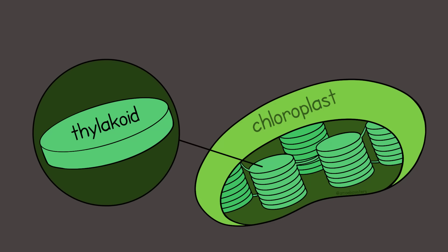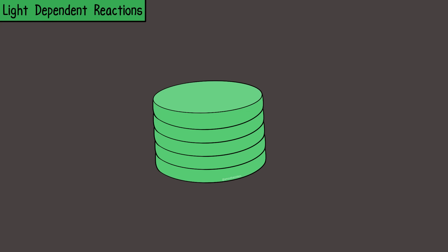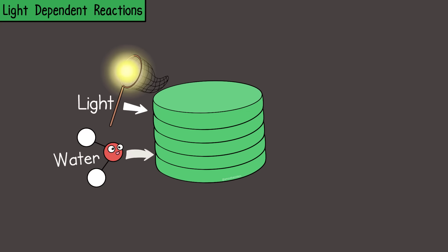Light-dependent reactions happen in the thylakoids—little compartments in the chloroplast that contain pigment. A collective stack would be a granum; multiple stacks would be grana. In the light-dependent reactions, light is captured and water—which is a reactant in the photosynthesis equation—is split. That means the chemical formula for water, H₂O, is split so you get electrons, protons, and oxygen. So oxygen is also a product of the light-dependent reactions.